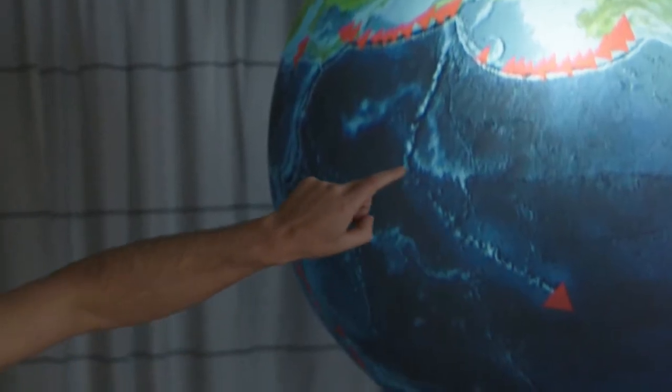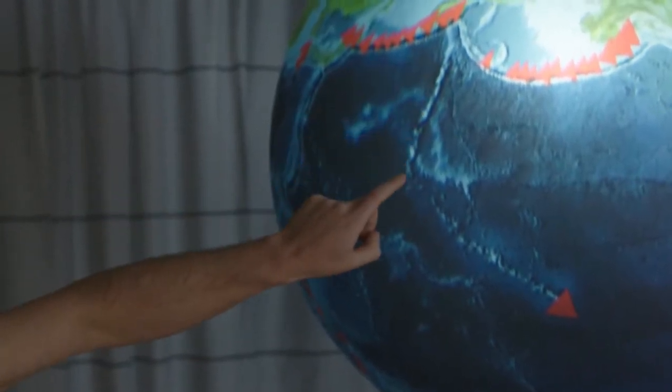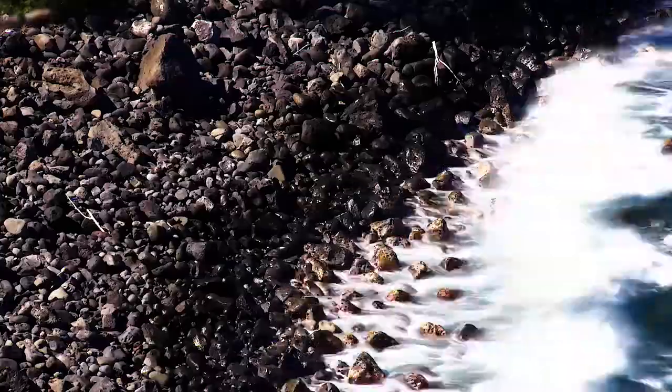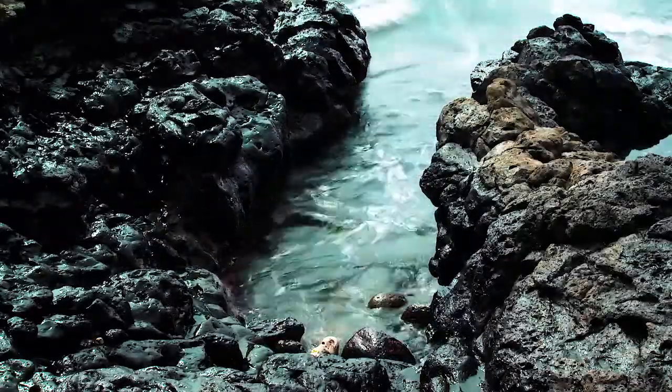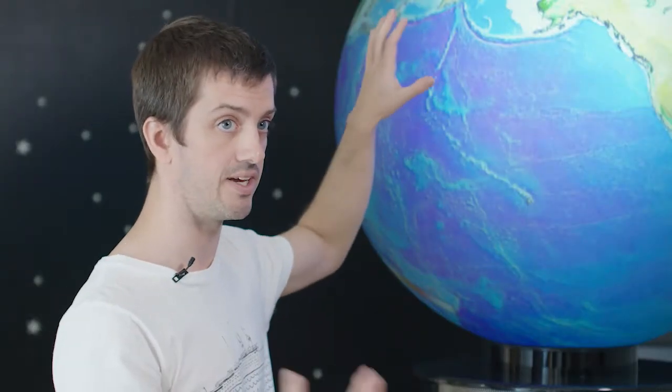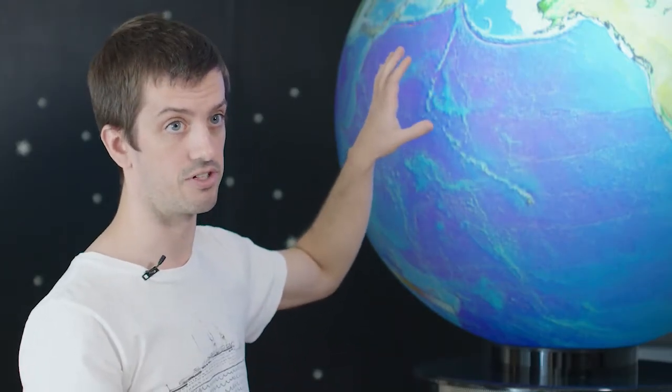For a very long time, we know the age of this bend, it's about 50 million years because we have dates from rocks coming from seamounts on either side of the bend. And we now think we have solved the mystery as to why the Pacific plate changed direction at 50 million years ago.